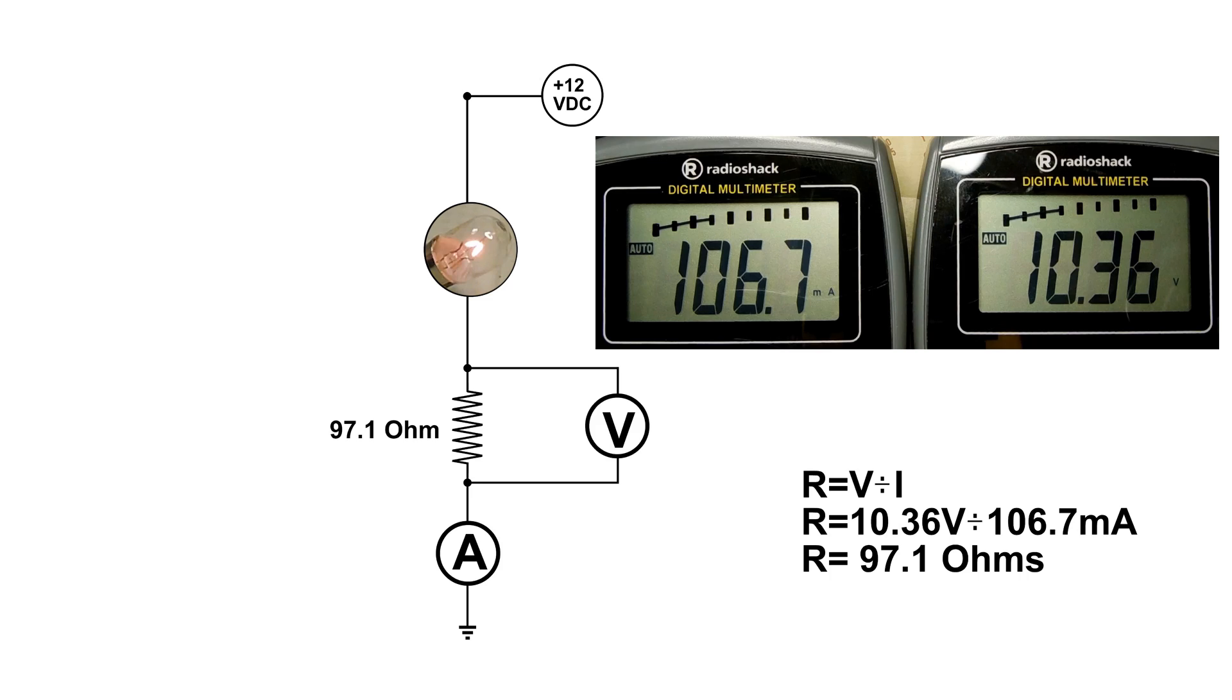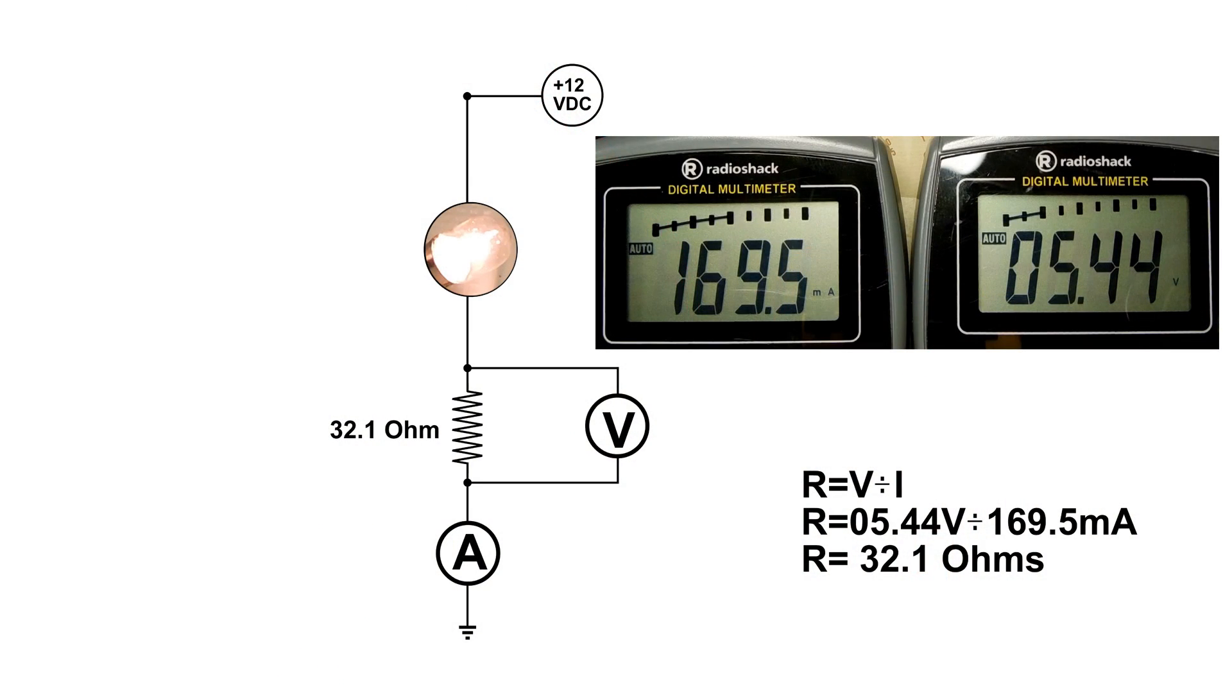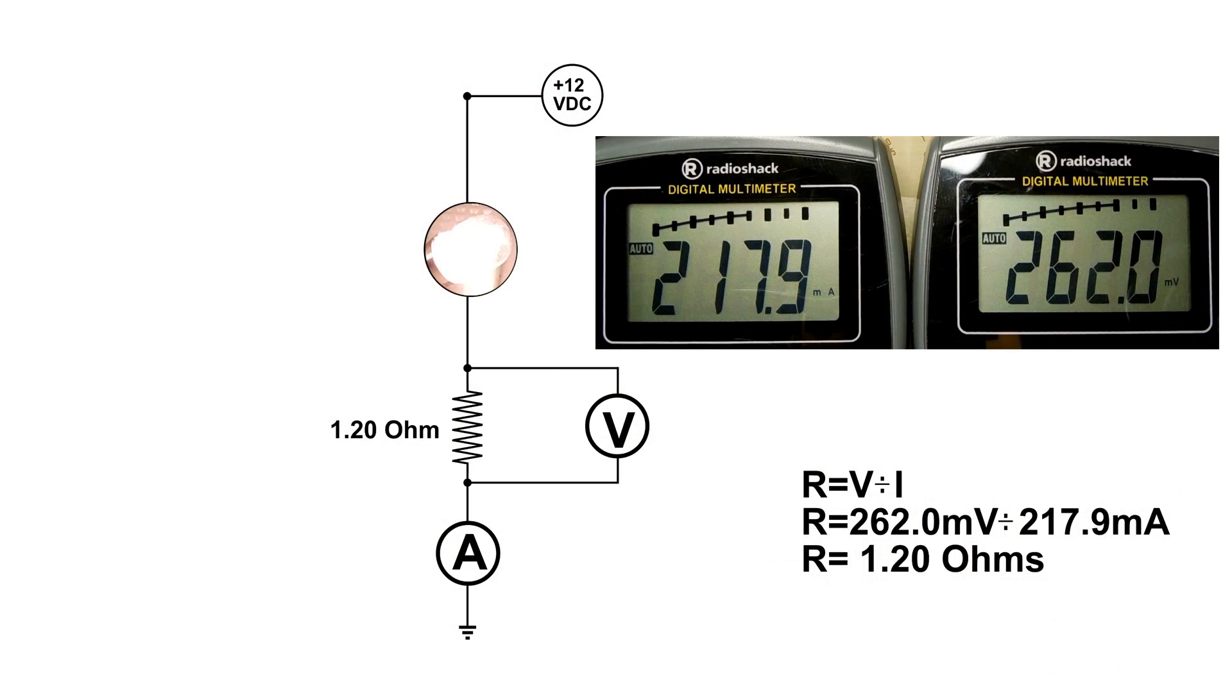Now here's the second bias point with a transistor and here it is with the resistor in circuit. And our highest bias point with a transistor and now with a resistor of 1.2 ohms.